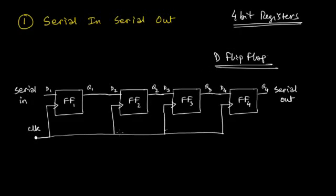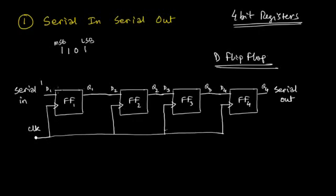If you take a look at the circuit, whenever a particular bit of data is available at the input D1 — let's say the data is 1-1-0-1, where this is the LSB and this is the MSB — whenever the LSB comes first and you get a clock pulse, this 1-bit input is stored by flip-flop 1 and immediately appears at its output terminal Q1. So Q1 also becomes 1.